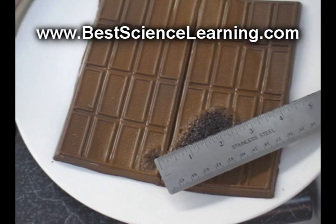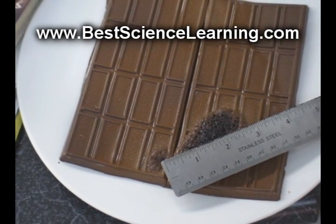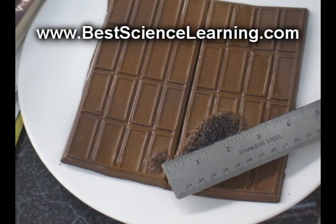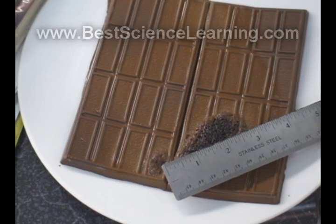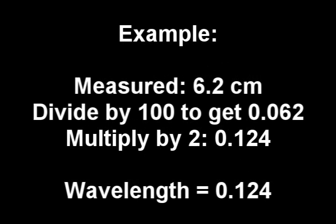Measure the distance from the centers of the hot spots in centimeters and divide your number by 100 to get the distance in meters. Multiply this number by two to get your wavelength. The distance you measure is only half the wavelength, so that's why you need to multiply by two. For example, if you measured a distance of 6.2 centimeters, your wavelength will be 0.124.